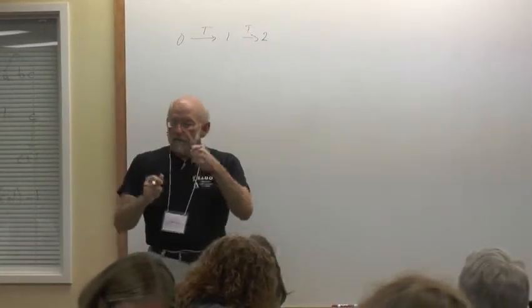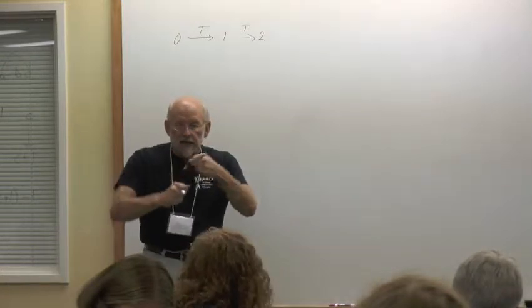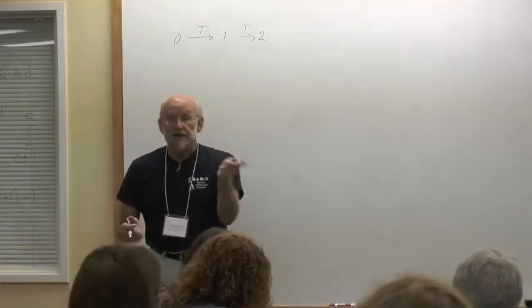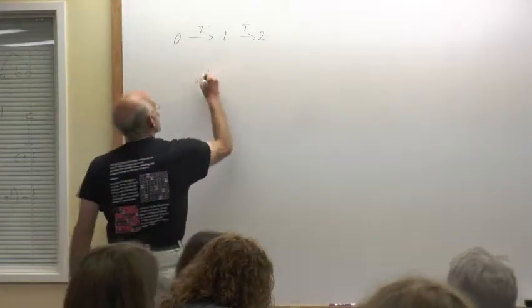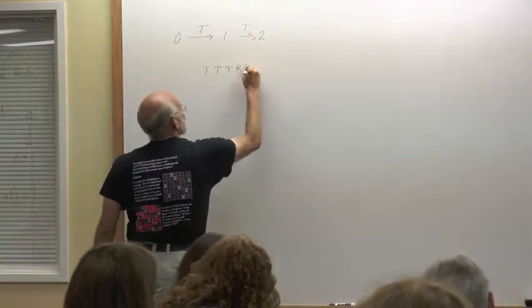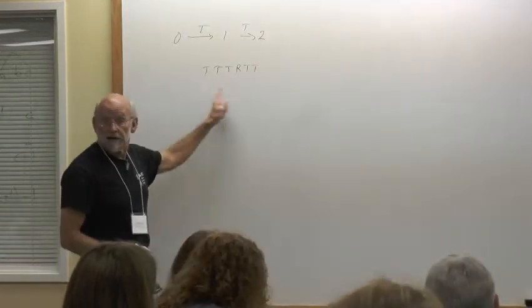So if we start from wherever we are, we could indicate a series of moves just with a bunch of T's and R's. If I did three twists, T, T, T, and a rotate and then two more twists, I could just write it something like this.